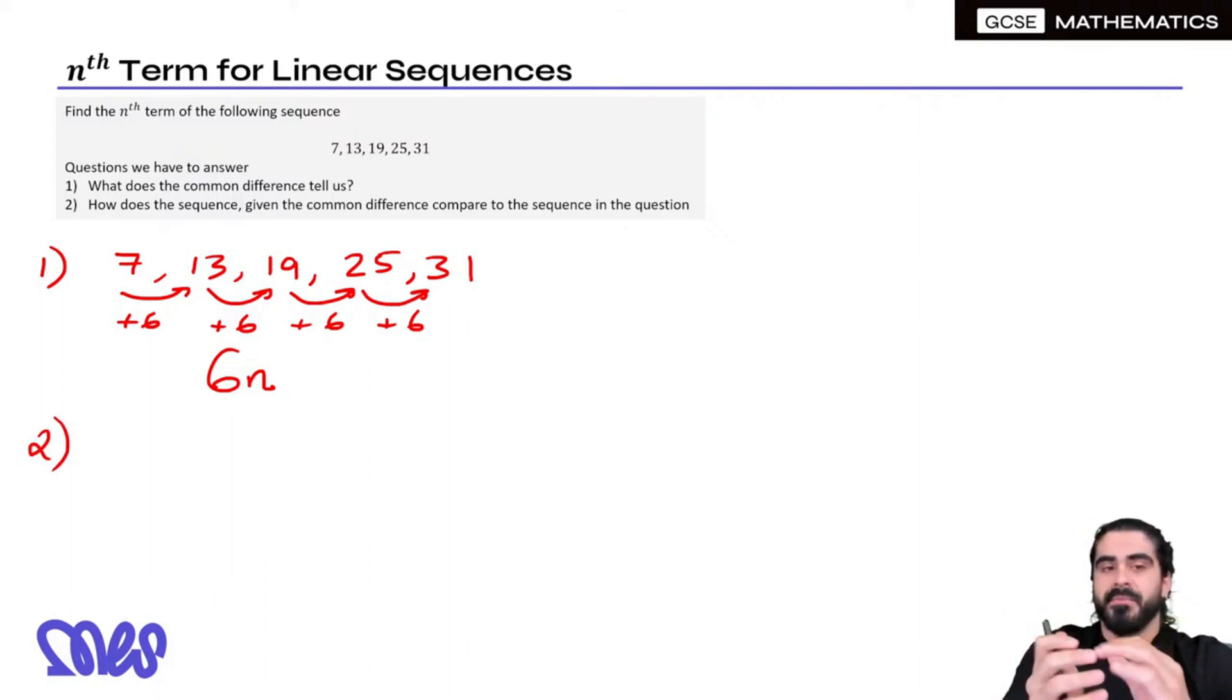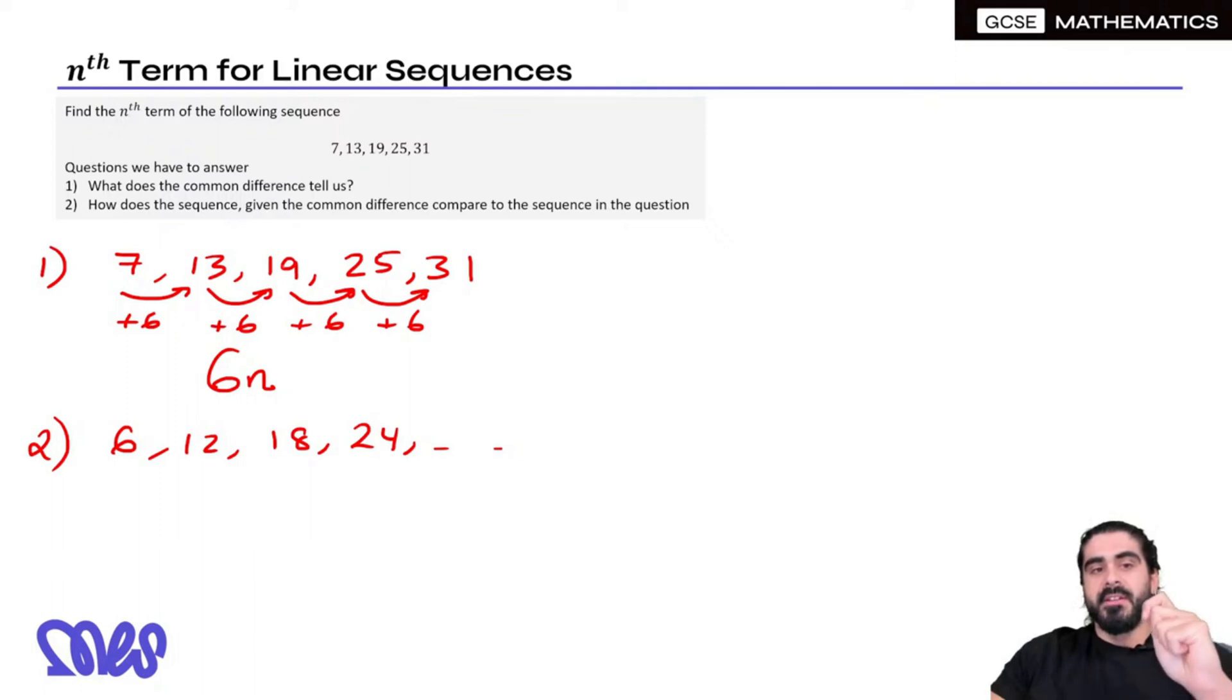The second thing we're saying is, because we know it's 6N, remember what we said in the previous slide, when we saw 4N, we're looking at the 4 times tables. Because it's 6N, we know we're talking about the 6 times tables. Now the 6 times tables are 6, 12, 18, 24, etc. Now look at the sequence in question. We want 7, 13, 19, 25. You can see that this sequence is just one more than the 6 times table.